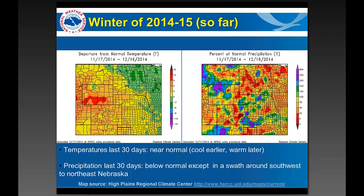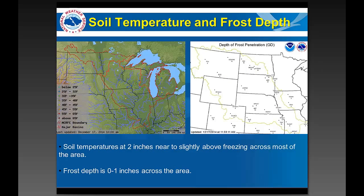Looking deeper into soil temperatures, our soil temperatures lately have been sitting near to slightly above freezing thanks to some prolonged above-freezing temperatures in the last couple of weeks. Frost depths are around 0 to 1 inches after having an early freeze-up that thawed away again. We look at this to get a feel for whether precipitation can still get into the ground and add to soil moisture before the ground freezes up. At this point we still have loose ground and would be able to take up some moisture if any were to fall.